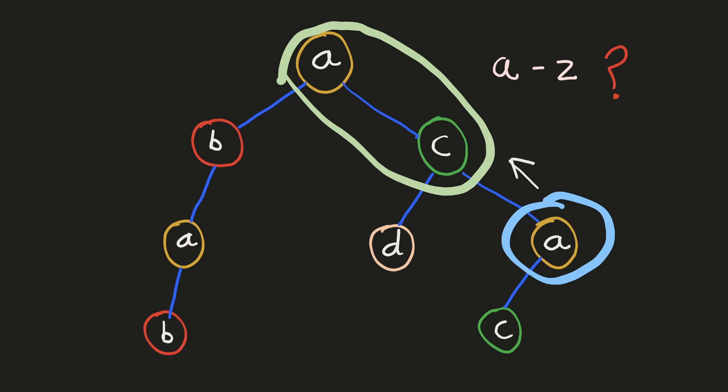The problem is: how do we know which labels belong to its ancestors? They can be any one of the 26 lowercase characters. Since there are only 26 lowercase characters, why don't we keep track of all of them? So for each node, we'll count the occurrence of each character in its subtree, and this value will be passed up to the parent to help calculate its result, and so on. Let's see this in action.